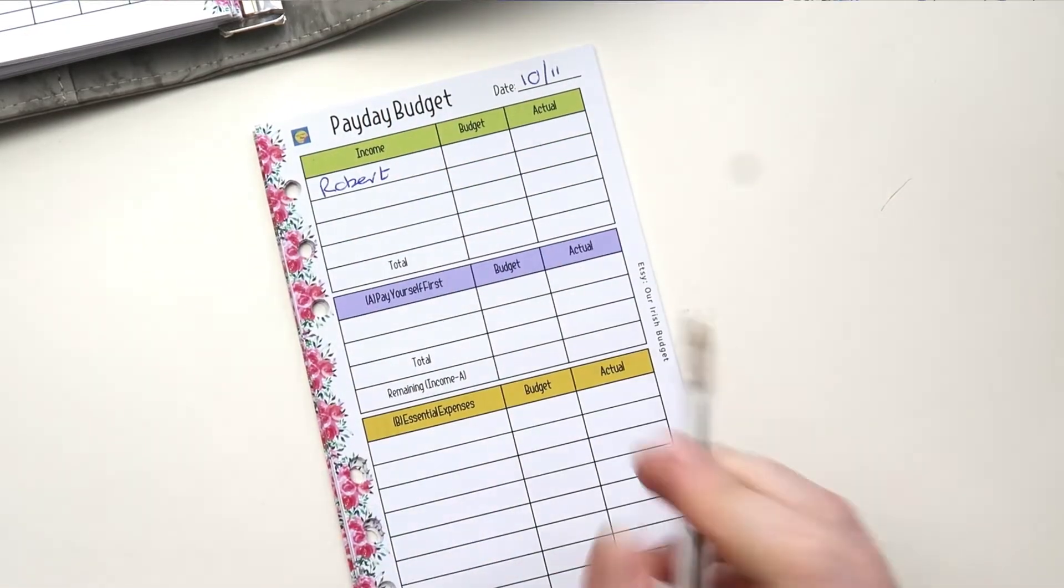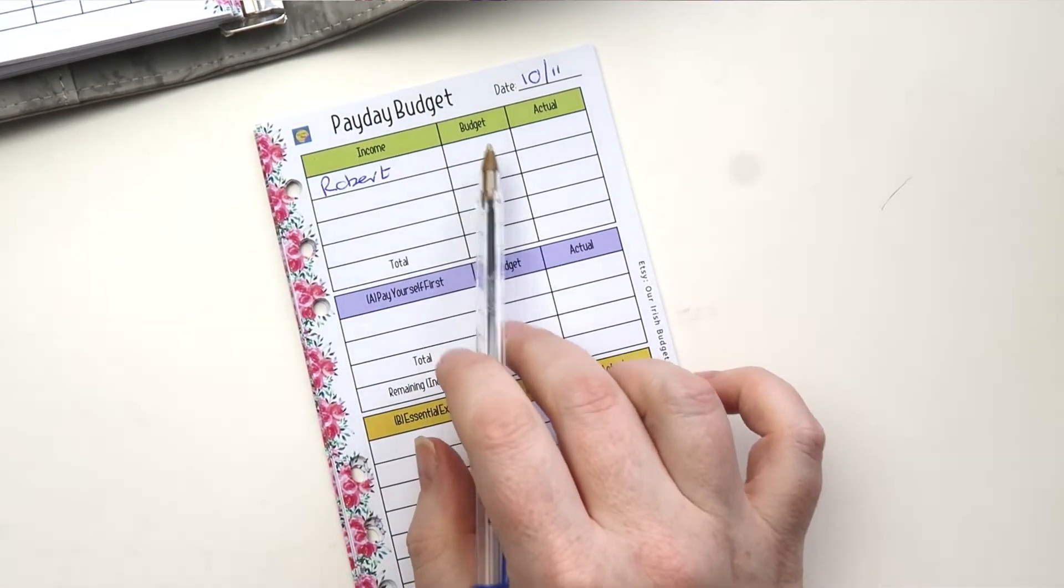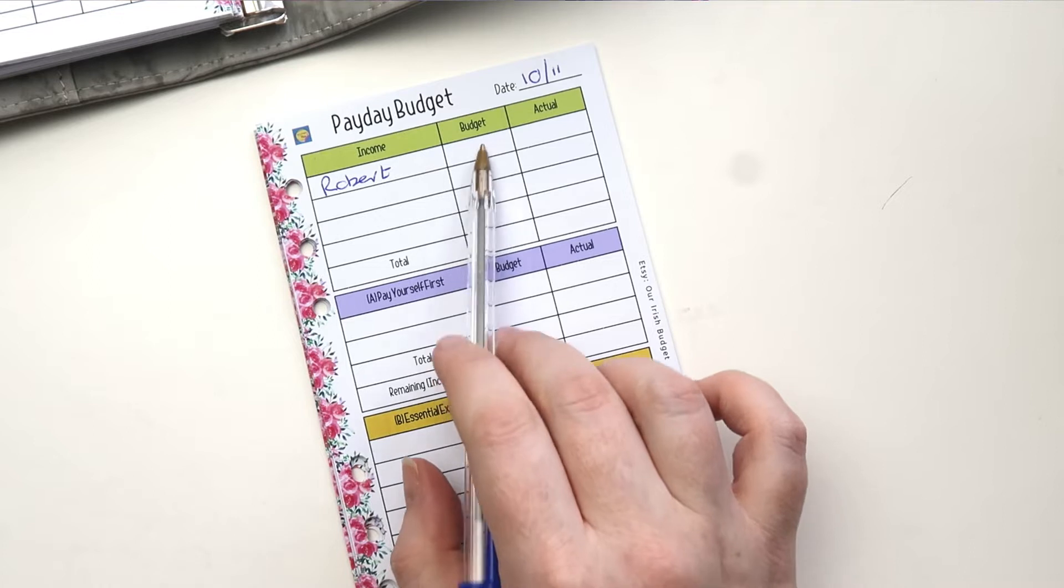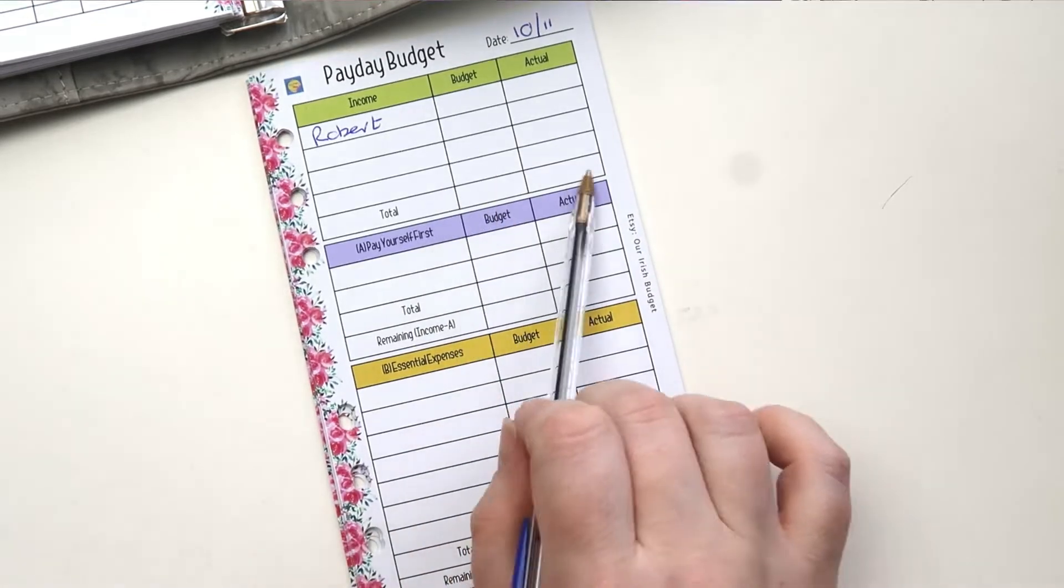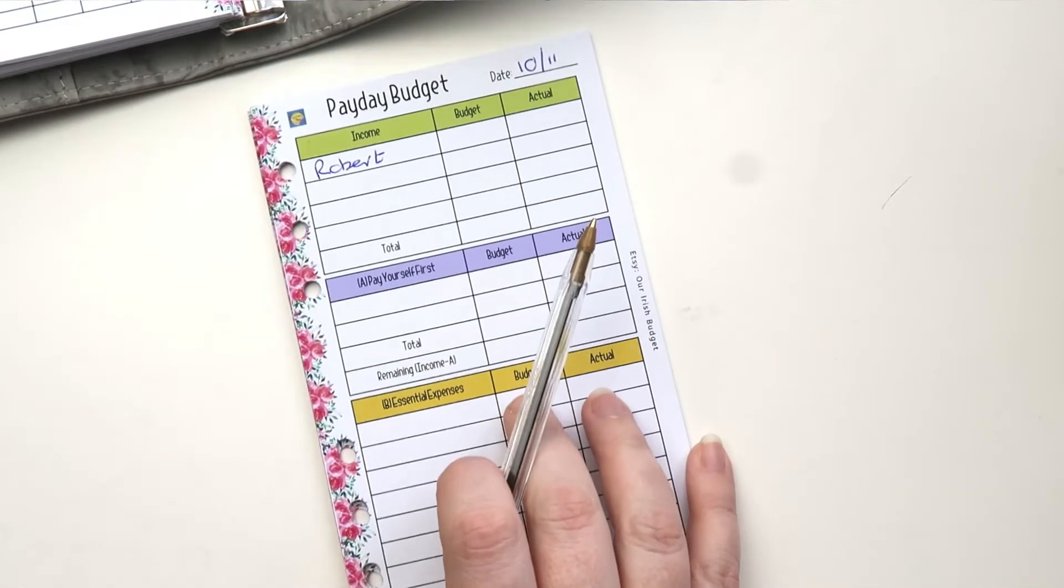So it's the 10th of November and our income this week is going to be Robert. So it's always Robert. We put in his income here and then we'll get the total that we have to budget with for this paycheck.